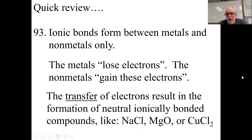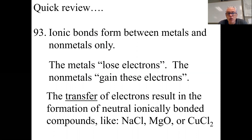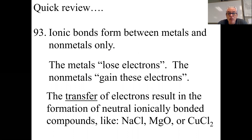Ionic bonds form between metals and non-metals. The metals lose their electrons and non-metals gain — that means they transfer electrons and they make neutral ionic compounds. They're neutral because the electron transfer is perfect. Whatever the charges of the positive cations are, they have to balance with the negative anions. With sodium chloride: positive one, negative one — no problem. Magnesium oxide: positive two, negative two — no problem. But with copper(II) chloride, we have a positive two and a negative one anion.